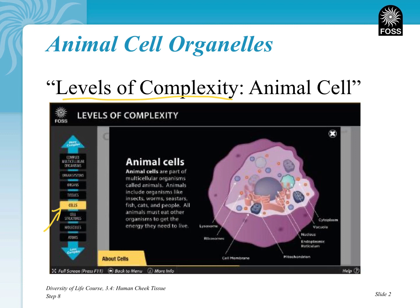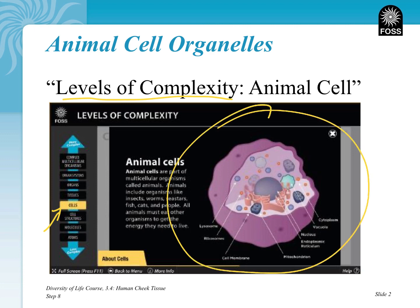It says animal cells are part of multicellular organisms called animals. Humans are animals. Animals include organisms like insects, worms, sea stars, fish, cats, and people. All animals must eat other organisms to get the energy that they need to live. This is a typical kind of cell — a general cell. It's not identical to any specific one, but there are common characteristics in them.